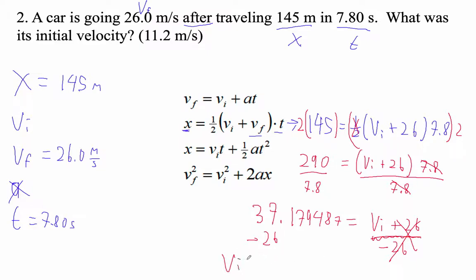So VI equals 11.179 meters per second. All right. We're not very good at that. We bat about 300 on that. 11.2 meters per second, roughly.